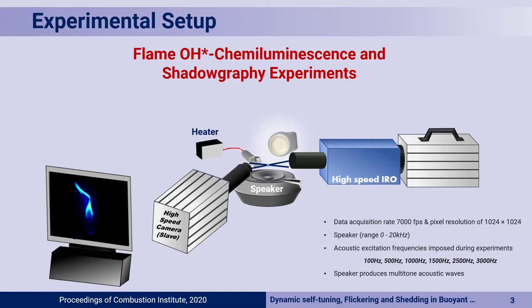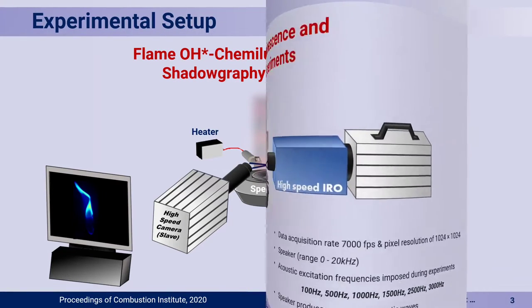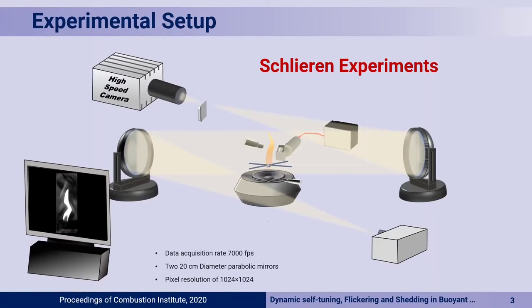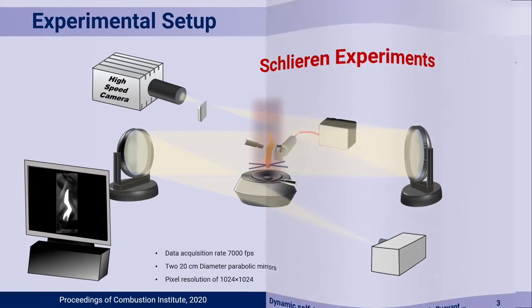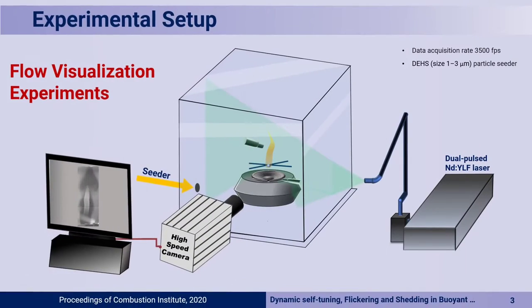These are the experimental setups. We did high-speed OH chemiluminescence, as well as Schlieren experiments, as well as high-speed flow visualizations at different framing rates, as mentioned in the slides.